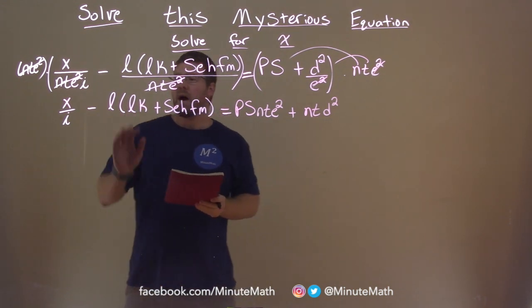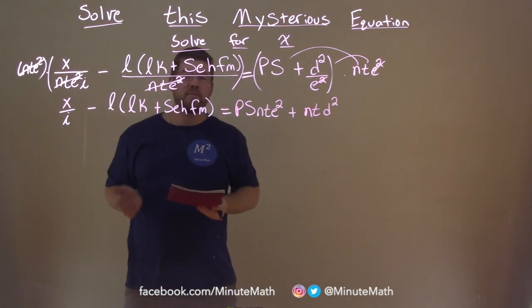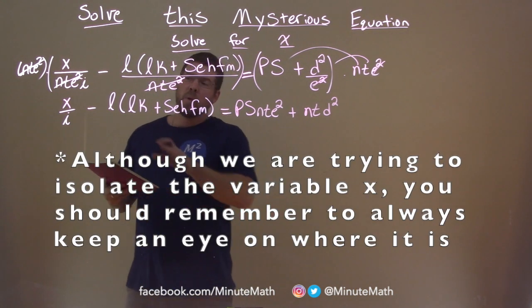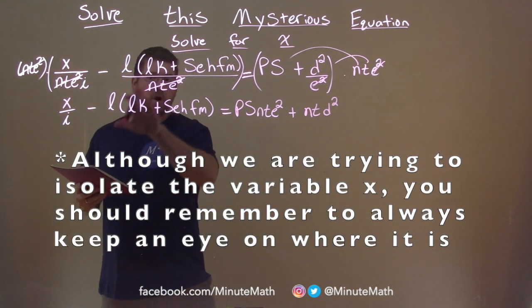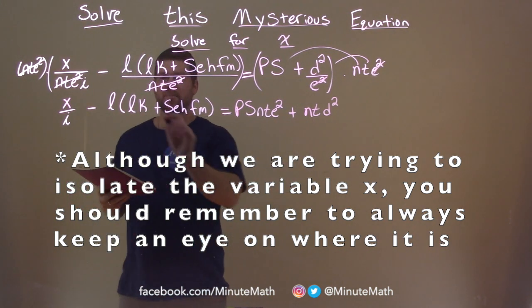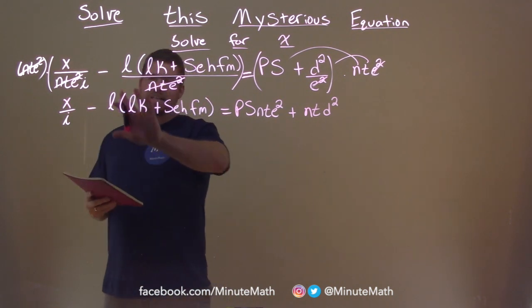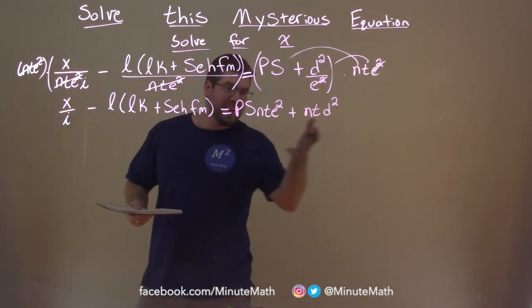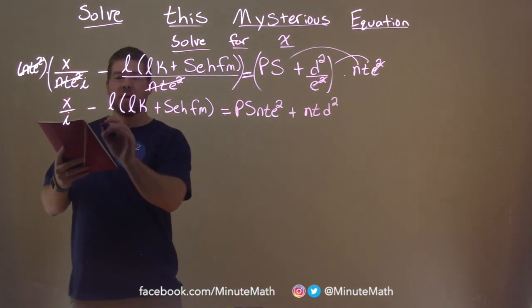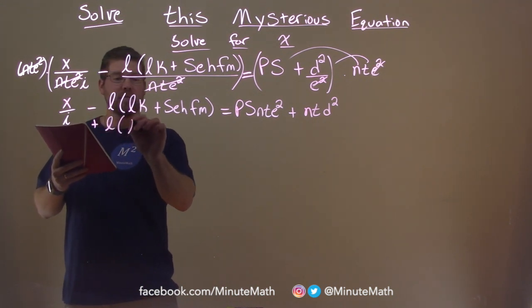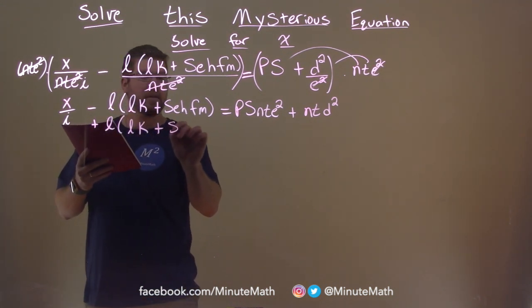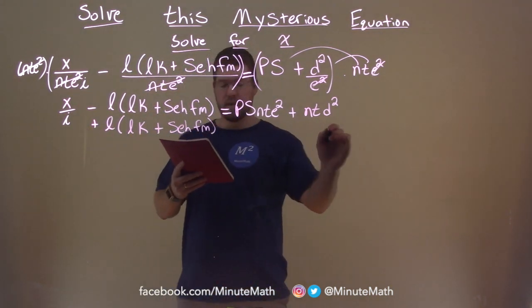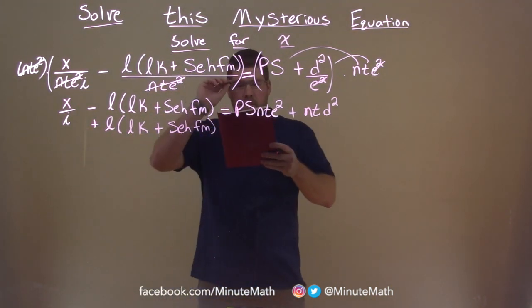Well, we want to get, remember, x by itself. We don't want it just sitting there. I don't want watching it. So what we want to do is bring this part, whole thing, over first. Now some people like to distribute first, but I see this whole thing as a subtraction. Opposite of subtraction's addition. Let's just bring it over to the right-hand side. So let's add that l times lk plus sehfm to both sides.